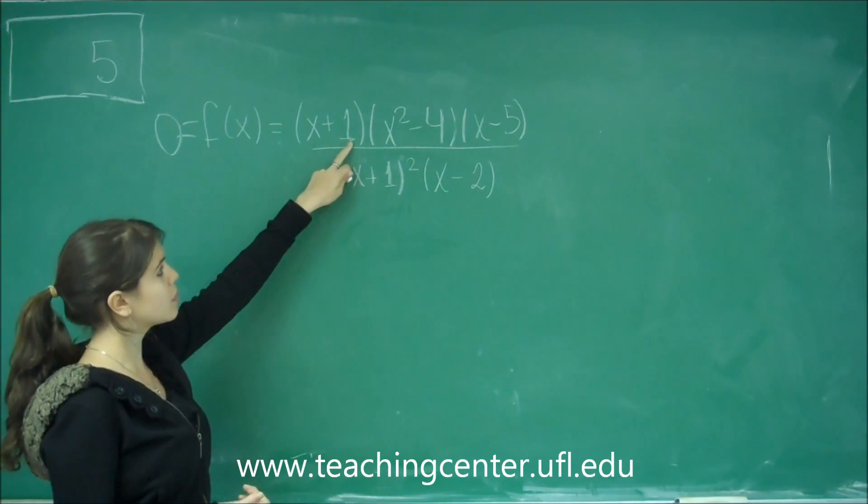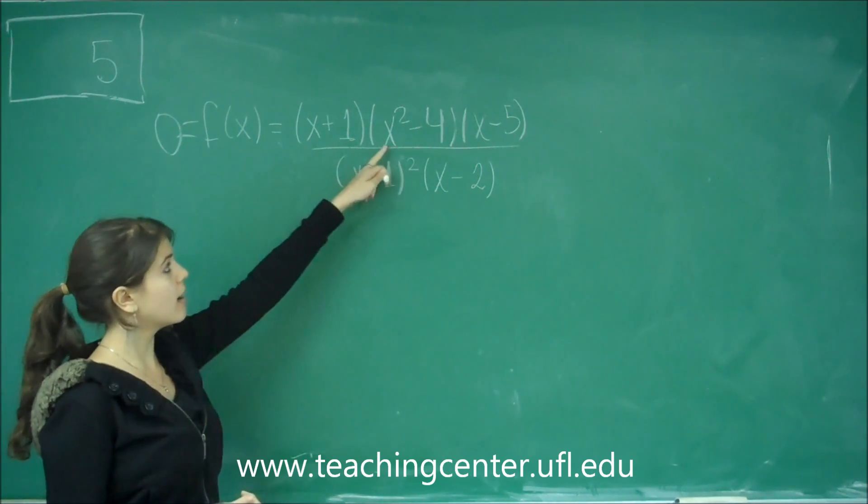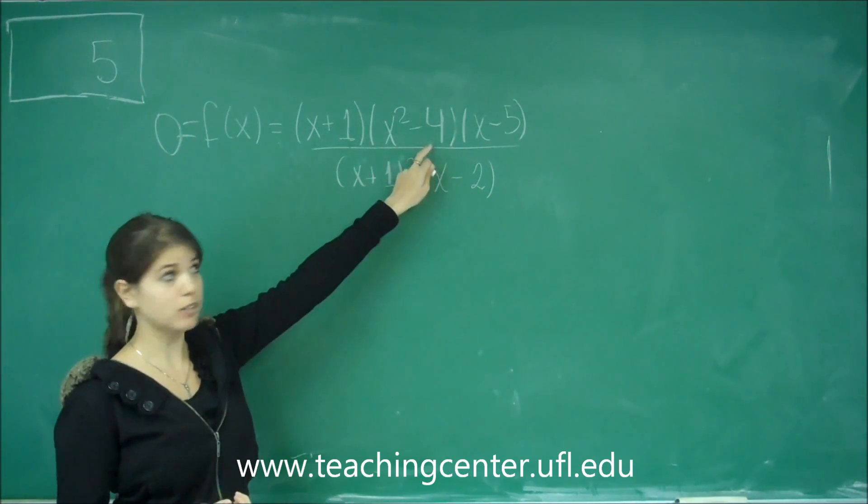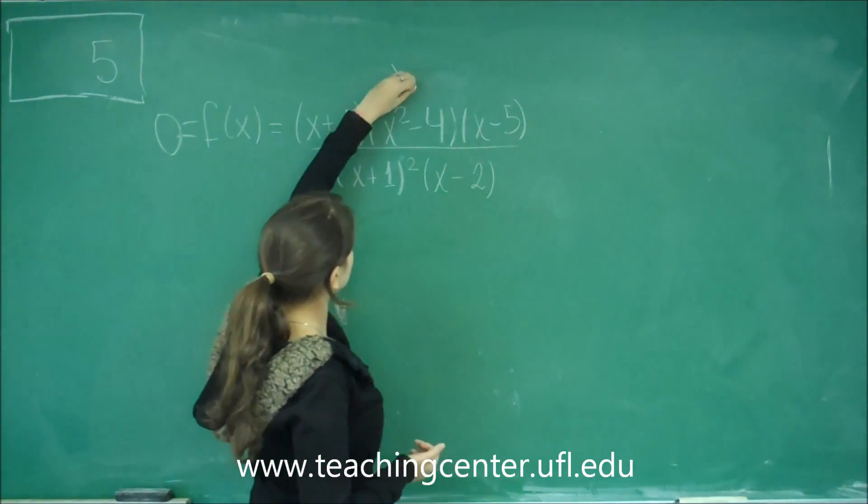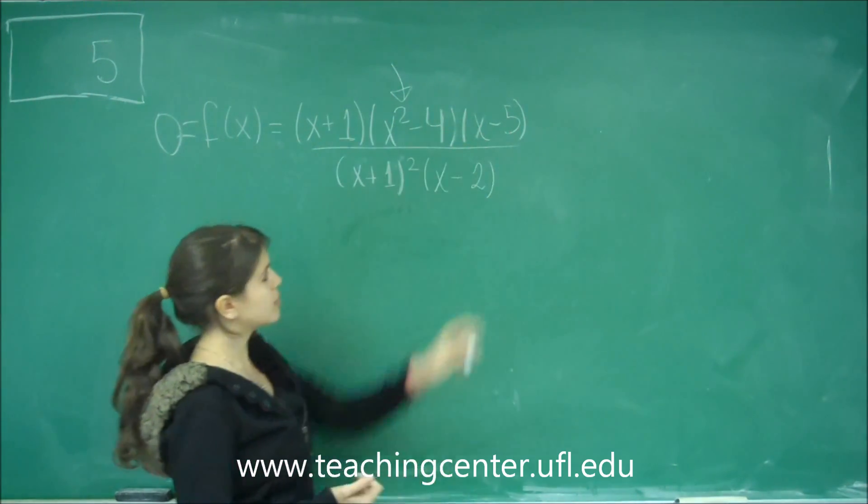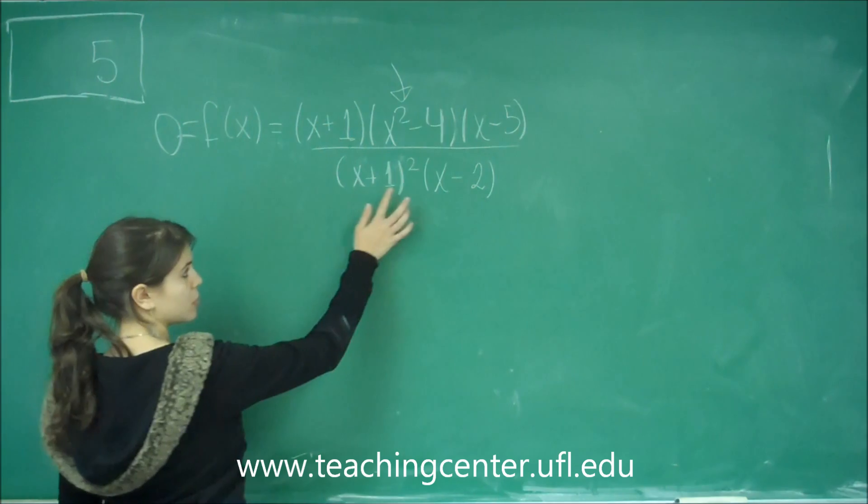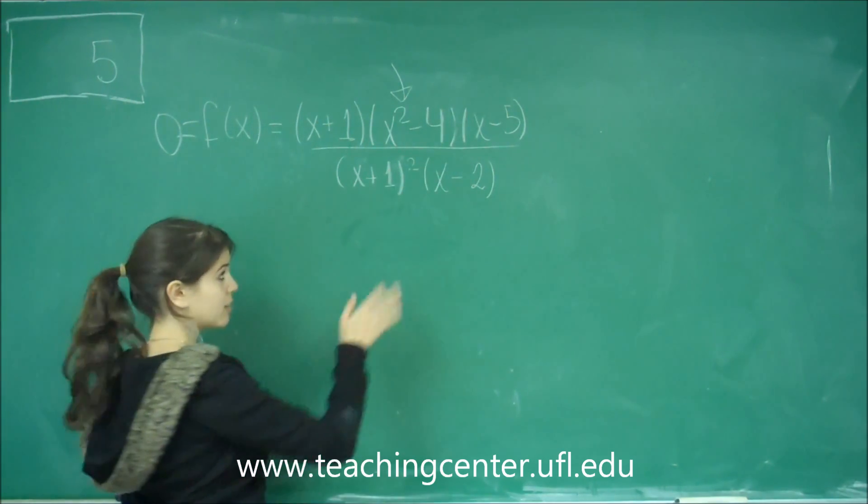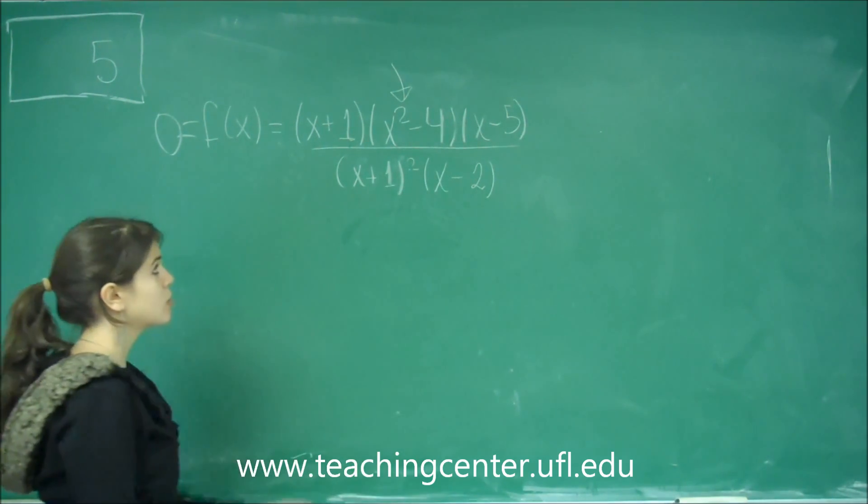x plus 1 has been completely factored, x squared minus 4 has not been completely factored, so we have to change this. x minus 5 is also fine, x plus 1 quantity squared is factored, x minus 2 squared.